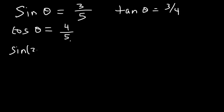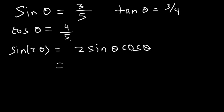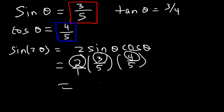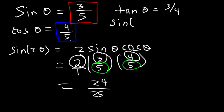Now let's find the value of sine 2θ. Sine 2θ = 2 sine θ cosine θ. We have sine θ = 3/5 and cosine θ = 4/5, so we just plug in. 2 is the same as 2/1, so we multiply: 2 × 3 = 6, then 6 × 4 = 24 on top. And 5 × 5 = 25 on the bottom. So sine 2θ = 24/25.